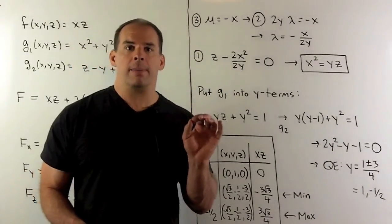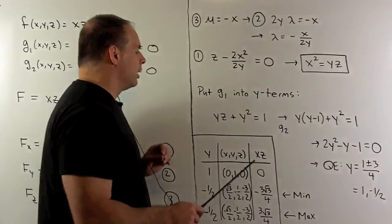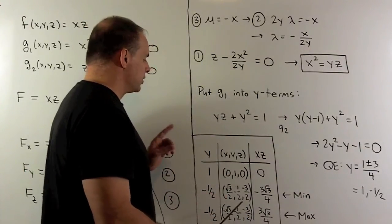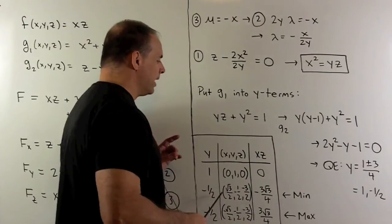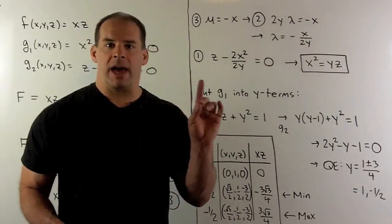Those are all the points that come out. Now all I have to do is compare the different xz values. We see here we get our maximum, here we get our minimum, and that agrees with the result that we had in Part 1.